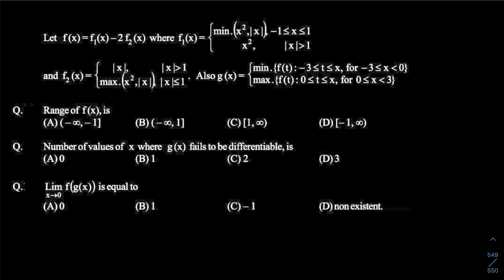It's a paragraph-based question which says that let f of x be f1(x) minus twice of f2(x), where f1 and f2 functions have been defined. They have another function g of x which utilizes f of x, and they ask you three follow-up questions. Now, first of all, what do you understand from the max/min? These are special types of functions used very frequently in JEE Advanced exams, so let us understand the meaning of min/max functions.